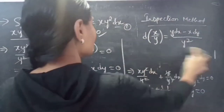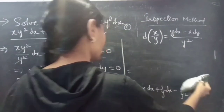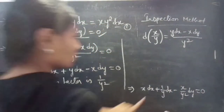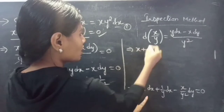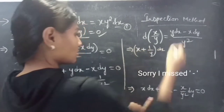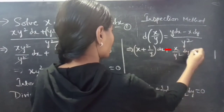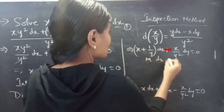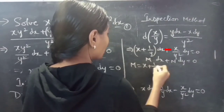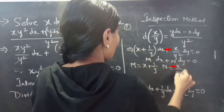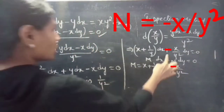Taking dx common from the first two terms, we get (x + 1/y) dx minus (x/y²) dy equals to 0, which is in the form M dx plus N dy equals to 0, where M equals x plus 1/y and N equals minus x/y squared.